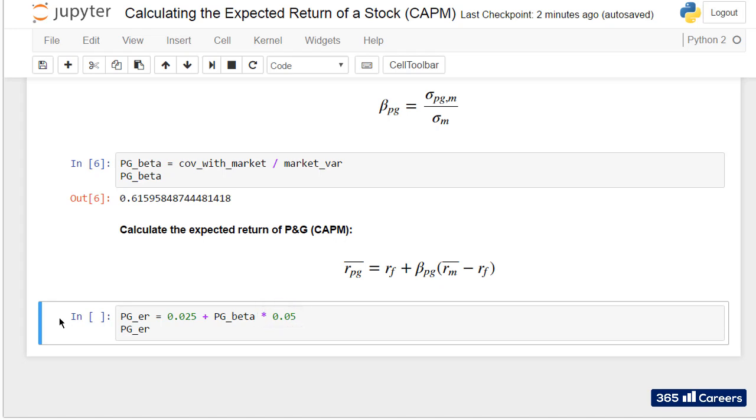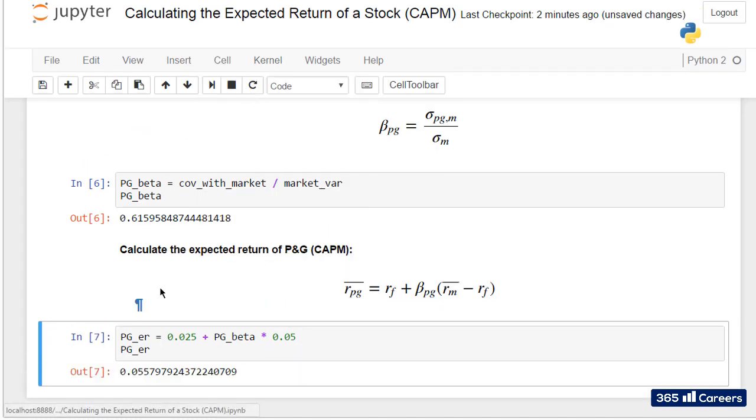Let's run this cell. The value we obtain is 5.6%. This is the return on investment a person would expect when buying P&G stock.